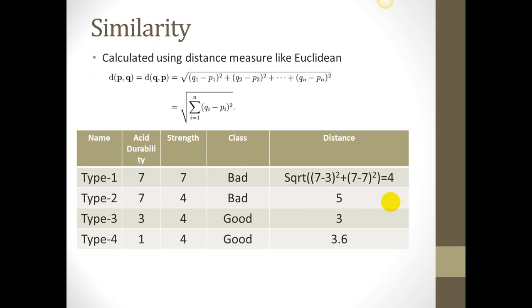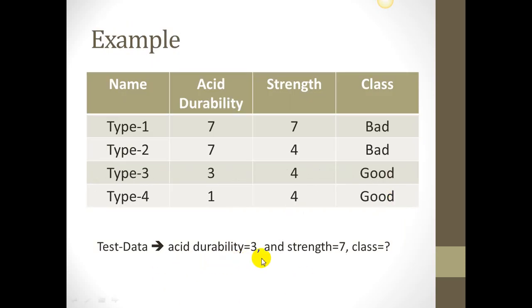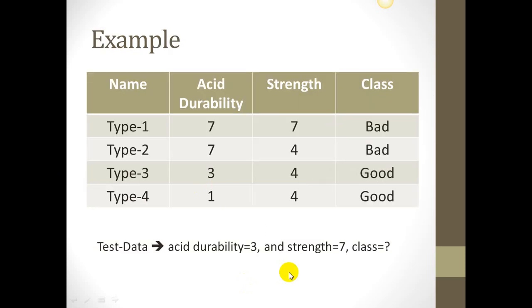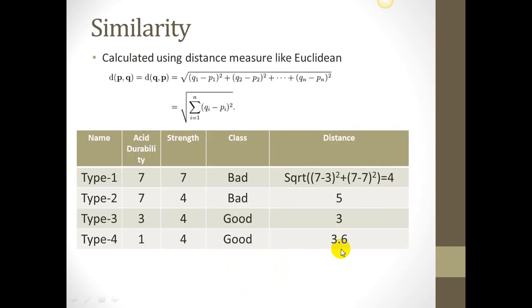We actually say for this particular test dataset with acid durability 3 and strength 7, we want to find out how close this particular tissue type is to already given types like type 1, 2, 3, and 4, and that we can do with the help of distance measure. For example, let's use the Euclidean distance measure where we say that distance is the square root of the differences between these particular types. In our case, if we calculate this distance for type 1, we are calculating this distance from this particular test where acid durability is 3 and strength is 7.